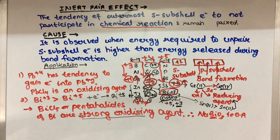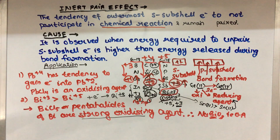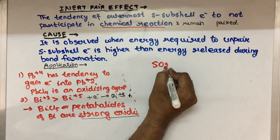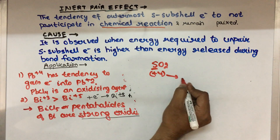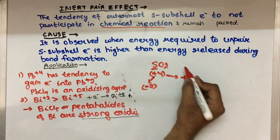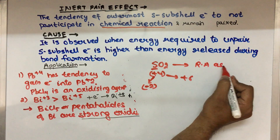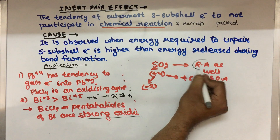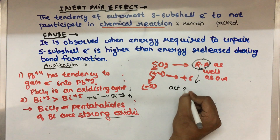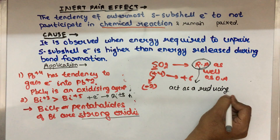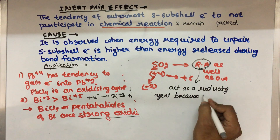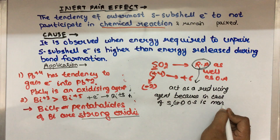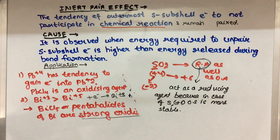In the case of group 16 elements, for example sulphur: if sulphur forms SO2, sulphur shows a +4 oxidation state. It can also show +6 and −2 oxidation states, meaning SO2 can act as both a reducing agent and an oxidizing agent. But practically, SO2 acts predominantly as a reducing agent, because in sulphur the +6 oxidation state is more stable. On moving down the group, the stability of the +6 oxidation state decreases.